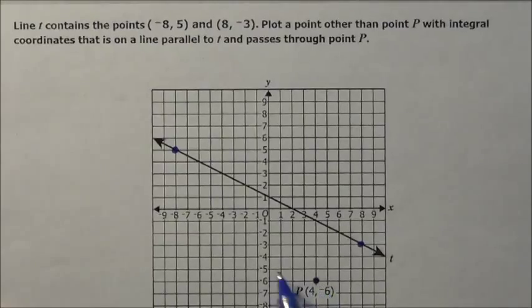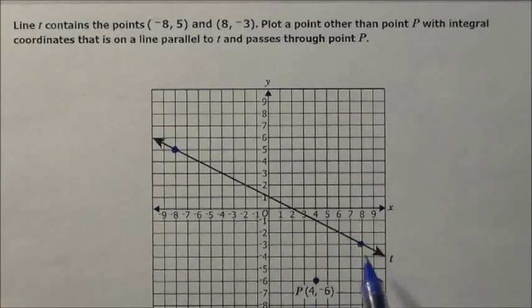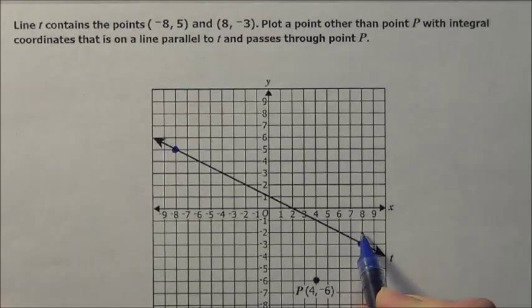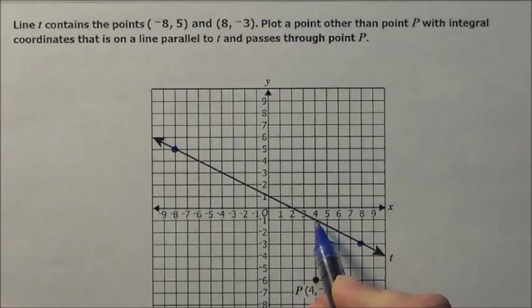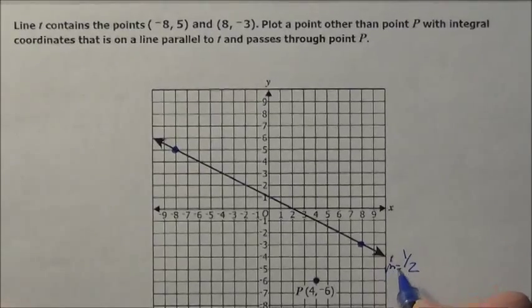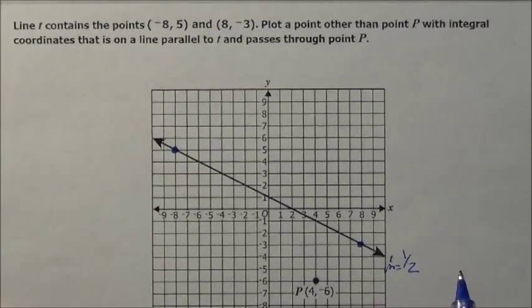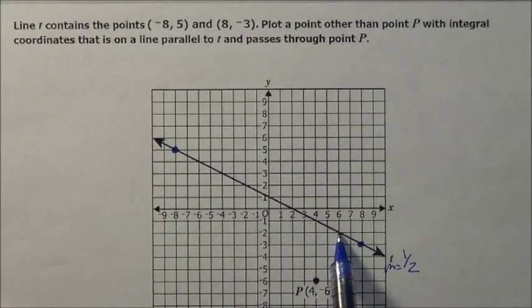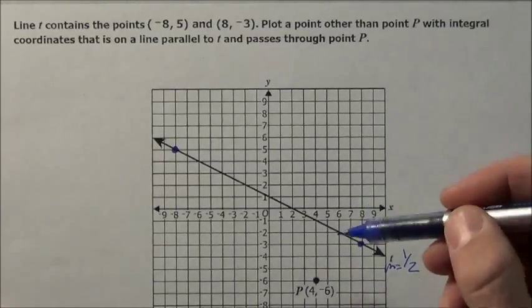Now what I need to do if I want it to be parallel, I have to have the same slope as this line t. Now it looks to me, if I just look at this, it looks like I rise 1, run 2. It looks like it has a slope equal to a half, but I'm not 100% sure. I better check because they gave me 2 points that are guaranteed on here, because that could be just a smidgen off and we don't want to make that mistake.